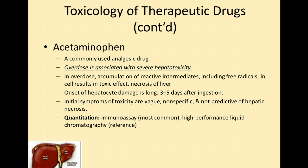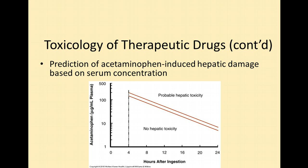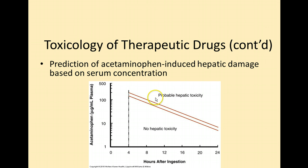We use immunoassay to detect acetaminophen in the blood, and we can also use high-performance liquid chromatography. If somebody takes the drug at zero hours, by four hours, if they took a lot of it and the level is above the upper threshold line on the nomogram, it's probably going to be toxic. This patient was definitely up in the probable hepatic toxicity range with a level of 200.